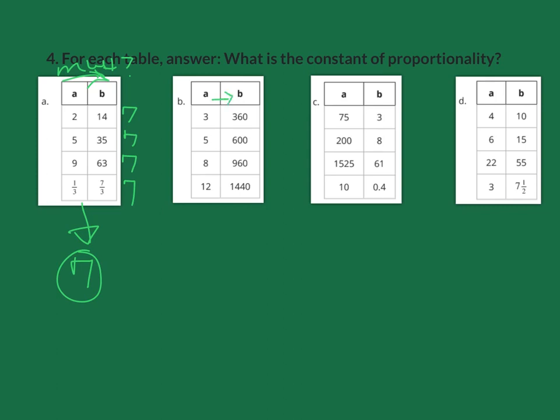From left to right, 3 times what is 360? Hopefully you recognize that 36 is there. 3 times 12 is 36, so it would be 120. Let's check: 5 times 12 is 60, so 5 times 120 is 600. 8 times 12 is 96, so 8 times 120 is 960. 12 times 12 is 144, so 12 times 120 is 1440. Our constant of proportionality in this one is 120.